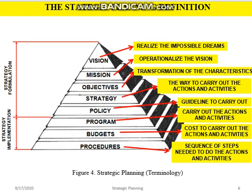We discuss the definitions. Vision is to realize the impossible dream. Mission operationalizes the vision. Objective is the transformation of the characteristic. Strategy is the way to carry out the action and activity. Policy is the guideline to carry out. Program is to carry out the action and activity. Budget is the cost to carry out the action and activity. Procedure is a sequence of steps needed to do the action and activity.